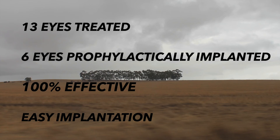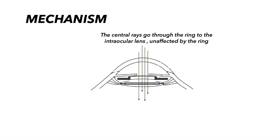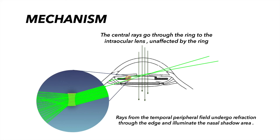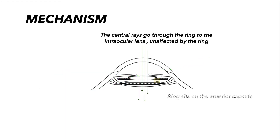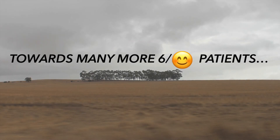The efficacy of this device is rooted in addressing both major contributory factors of negative dysphotopsia simultaneously. The edges of the ring redistribute the temporal peripheral rays evenly in the nasal retinal periphery, and the ring sits on the anterior capsular remnant, blocking rays at high incidence angles from falling on the capsule. Thus, this device shows promise as a feasible solution instead of the tricks and trials currently in practice for managing negative dysphotopsia.